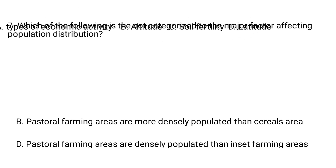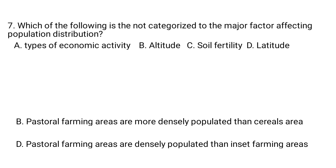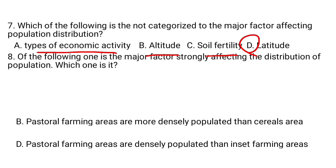Question number 7. Which of the following is not categorized into the major factors affecting population distribution? A. Types of economic activity, B. Altitude, C. Soil fertility, D. Latitude. Types of economic activity, altitude, and soil fertility are major factors affecting the distribution of population.